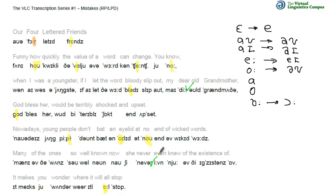But there is no linking R in 'wonder'. We do find a linking R in 'where it'll all stop'. Here is another R which shouldn't be there — 'God bless her' — it's of course 'God bless her', so it should be a different symbol again.